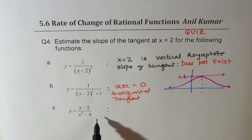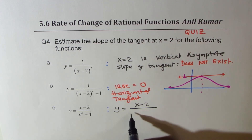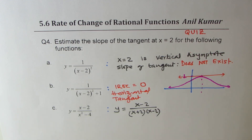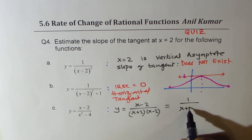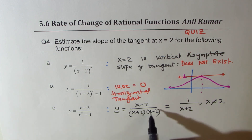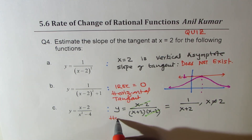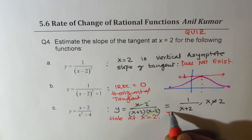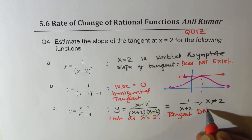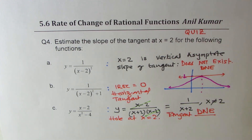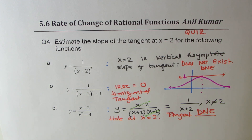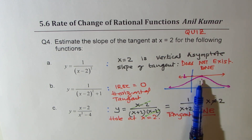For the third function, we can factor it as (x minus 2) over (x plus 2)(x minus 2), which simplifies to 1 over (x plus 2) where x is not equal to 2. Since the (x minus 2) factors cancel, there is a hole at x equals 2. Therefore, the tangent does not exist at x equals 2. Wherever slope is 0, that could indicate a maximum or minimum.